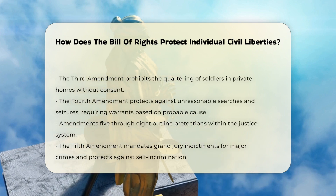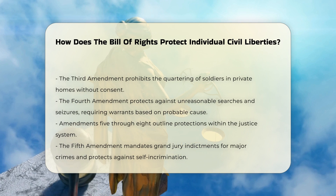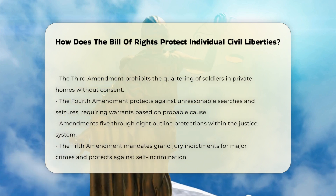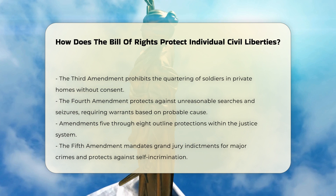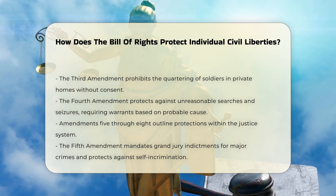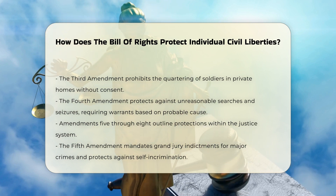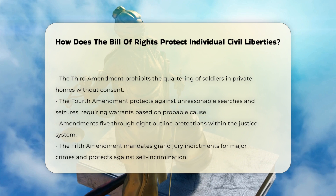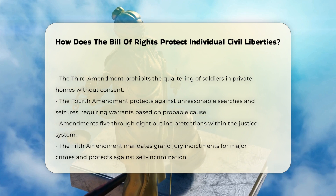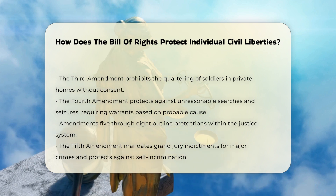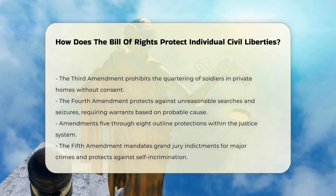The Fourth Amendment safeguards citizens against unreasonable searches and seizures, requiring specific warrants based on probable cause. Justice System Protections: Amendments 5 through 8 set forth guidelines for the justice system. The Fifth Amendment requires an indictment by a grand jury for major crimes, protects against double jeopardy, and ensures that individuals are not forced to incriminate themselves.